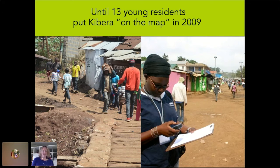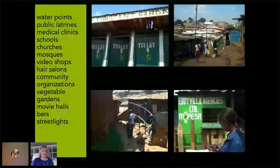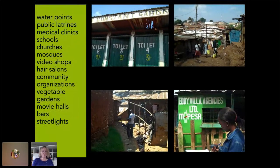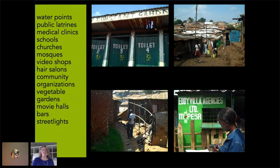As it turned out, we did get a lot of interest, especially from young people who were excited to learn anything technical, including using a computer, which they mostly did not know how to do. These are the kinds of things we mapped in that initial coverage — pretty much whatever they felt was important in their community to put on the map. This is an open data source.